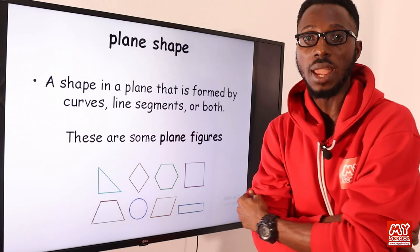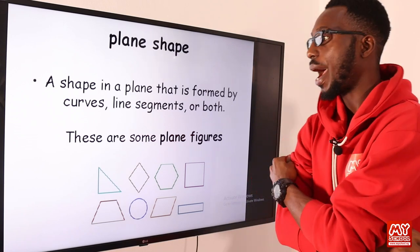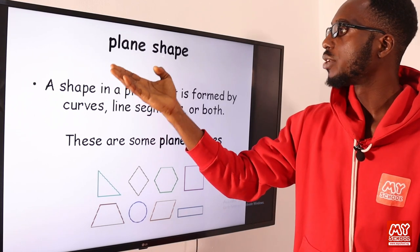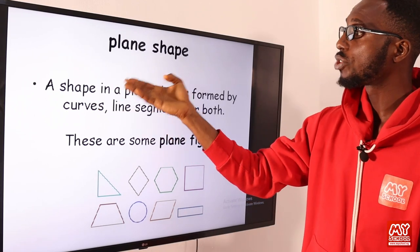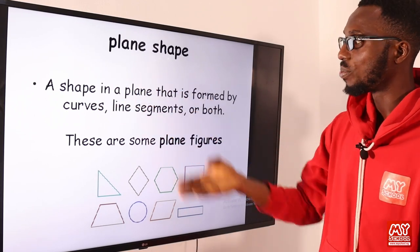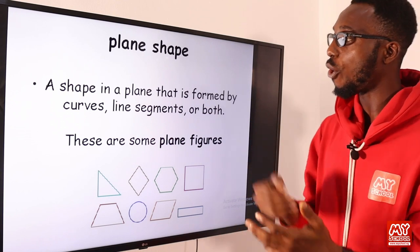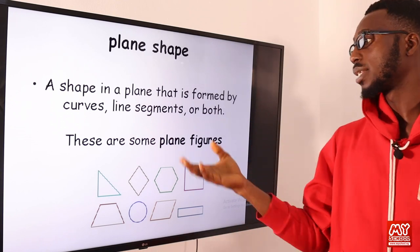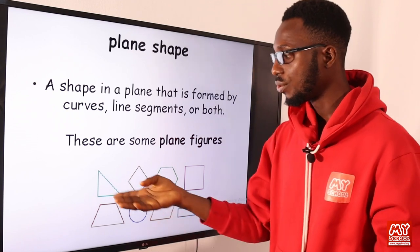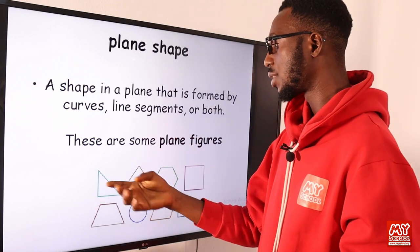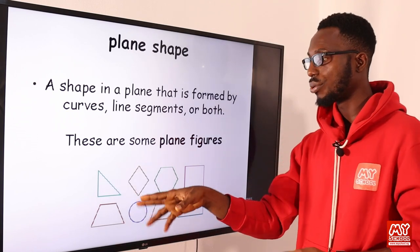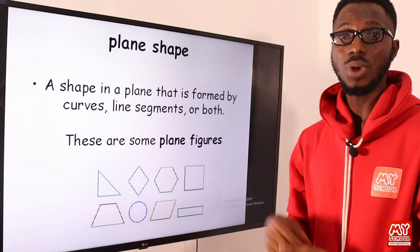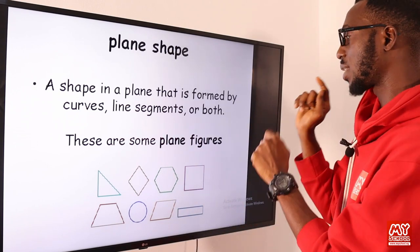Then we have your plane shapes — you can call them flat shapes. A plane shape is a shape in a plane that is formed by curves, line segments, or both. You can see some examples here — this is a triangle, this is a right-angle triangle. We have more examples to buttress this concept.